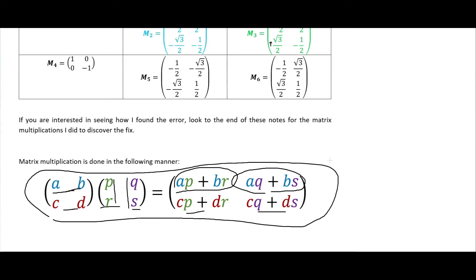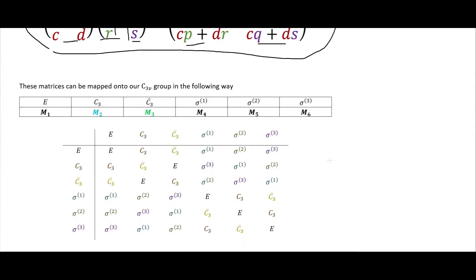This is how they pair up: M1 is our identity. M2 and M3—these are the ones I switched from the book—are C3 and C3 bar. Then we have these ones here for our sigmas.